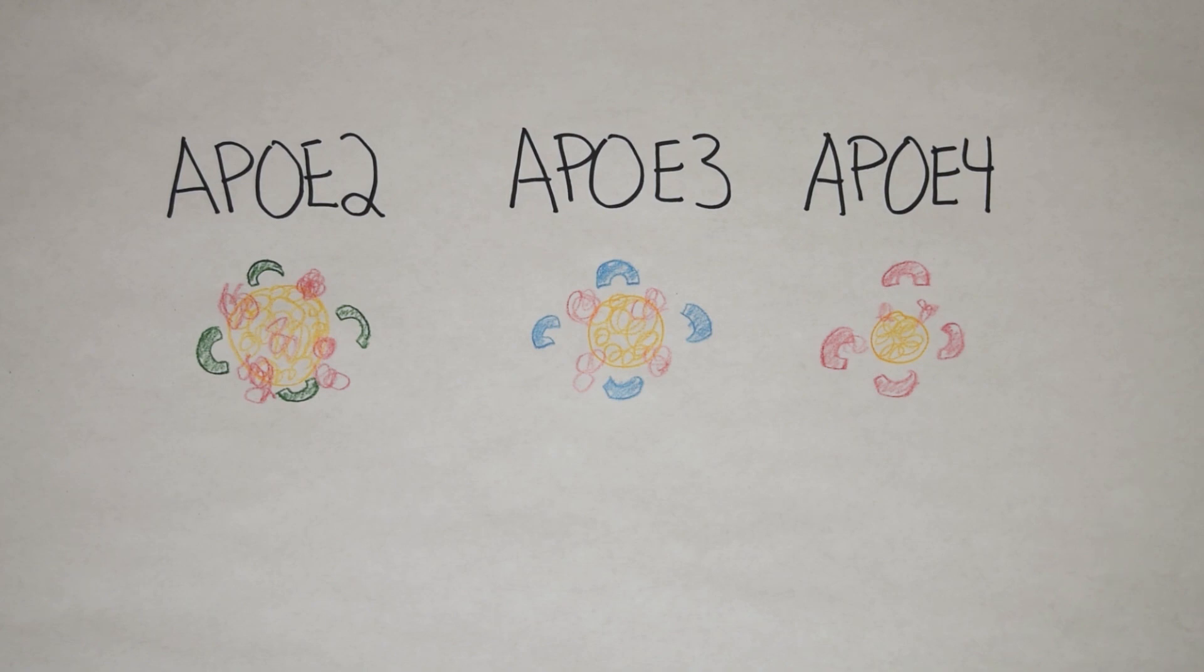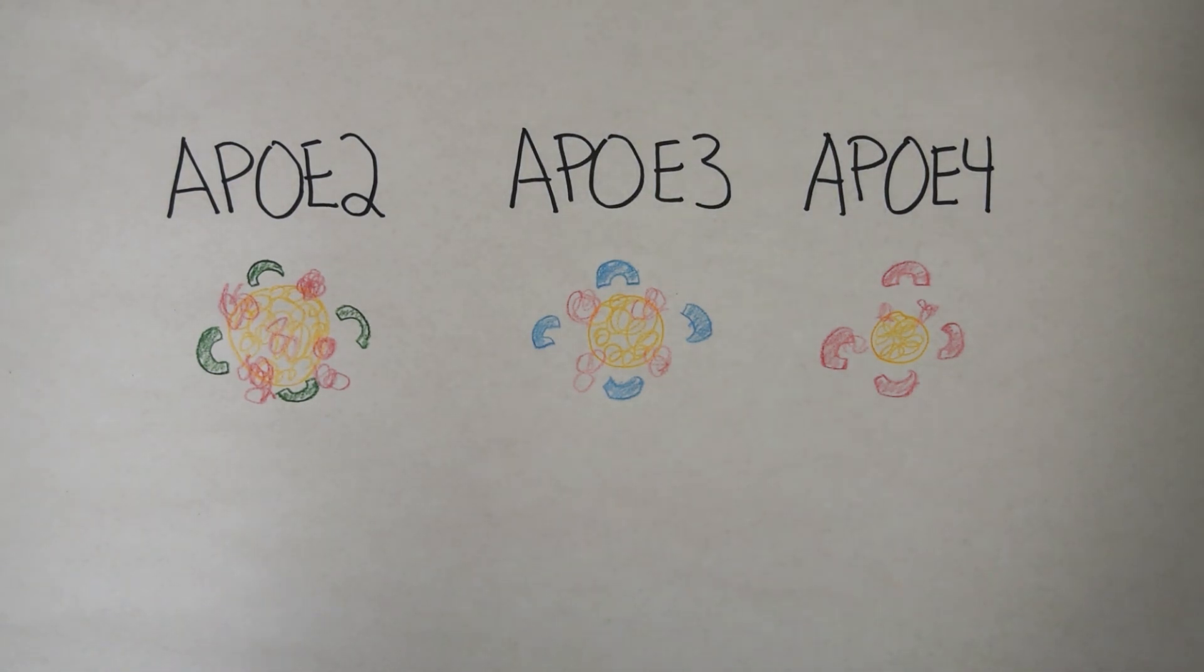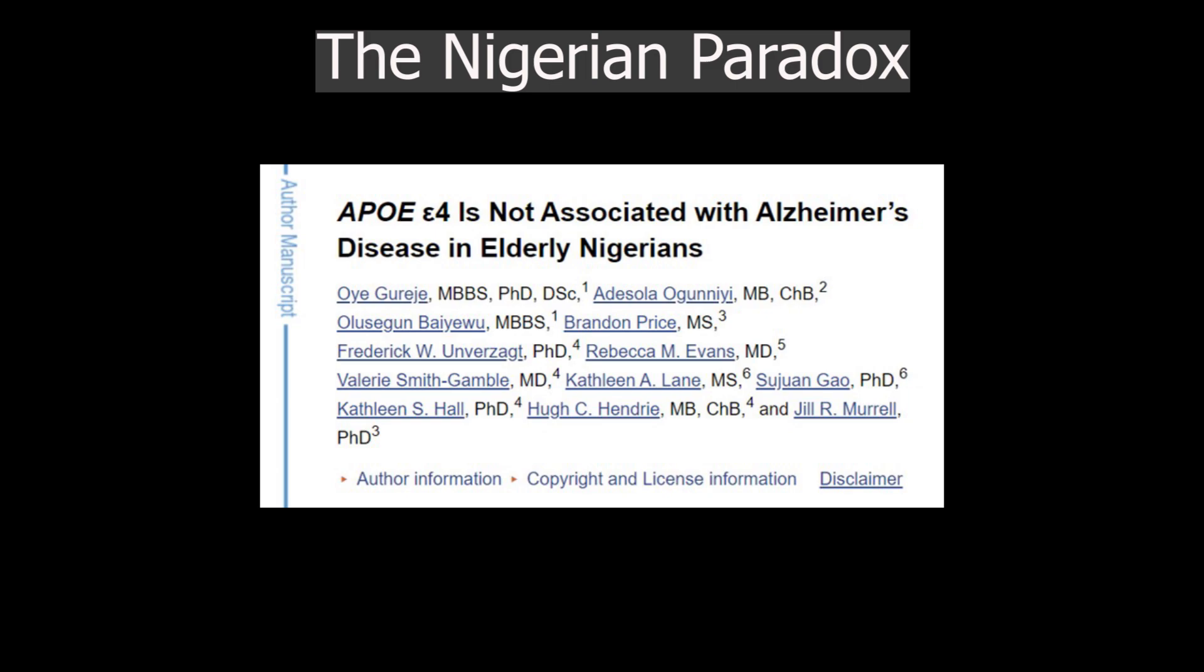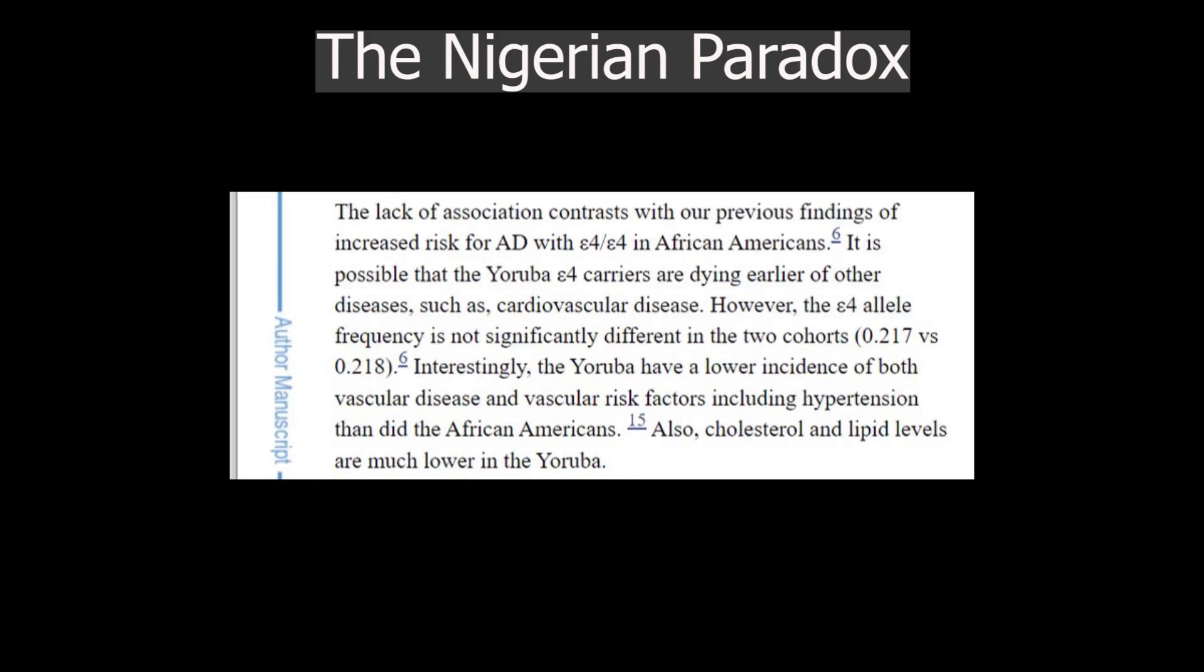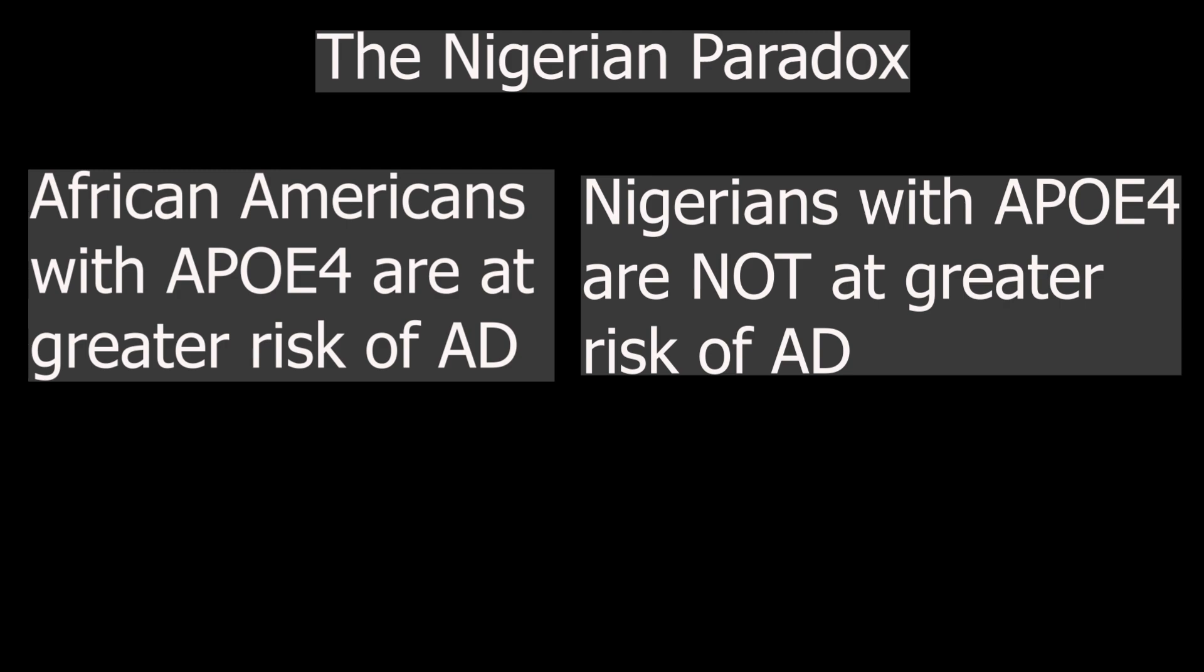And I do want to also add to this what the Nigerian paradox is. The Nigerian paradox is basically that African Americans in the United States have an increased risk of Alzheimer's disease if they have the APOE4 gene, but people who live in Nigeria with similar genetic backgrounds don't. And it's thought that it's diet and lifestyle. People who live in Nigeria actually have lower incidence of cardiovascular disease and lower cholesterol than the average American. And these two lifestyle factors probably contribute to the fact that APOE4 can do its job better when your cholesterol is lower and your heart is healthier.